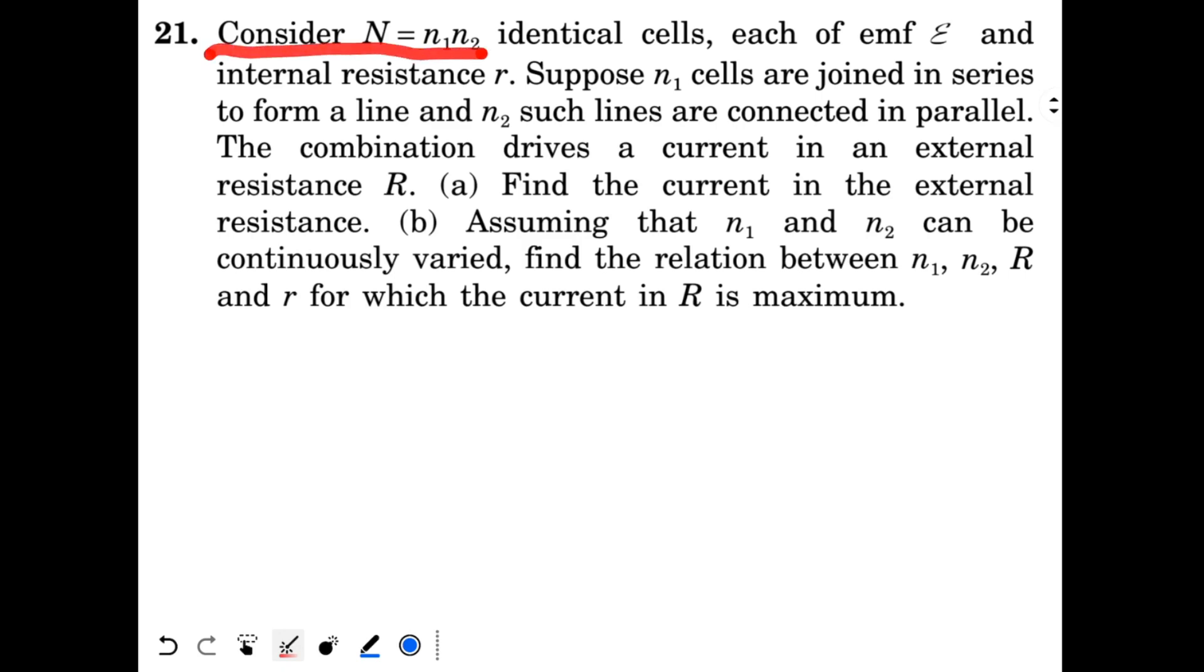Consider N equal to N1 and N2 identical cells, each of EMF E and internal resistance r. Suppose N1 cells are joined in series to form a line and N2 such lines are connected in parallel. The combination drives a current in an external resistance R. Find the current.